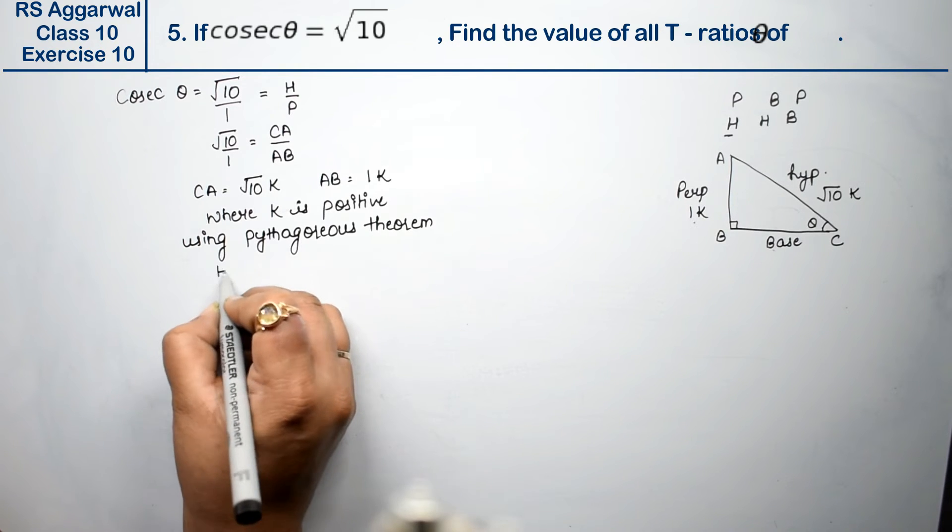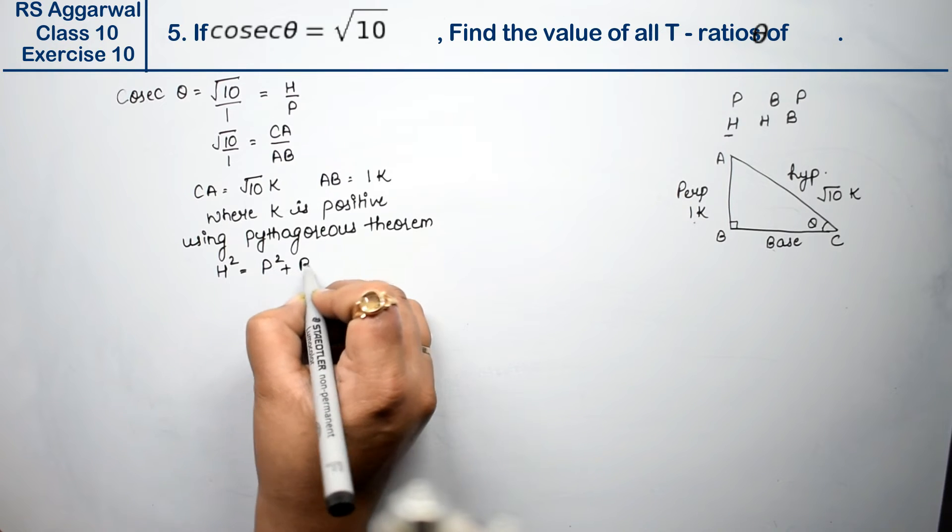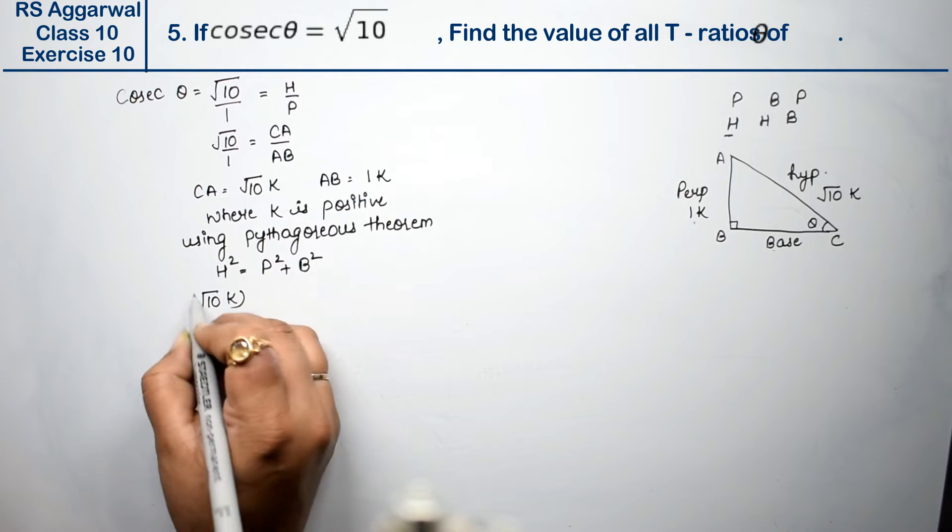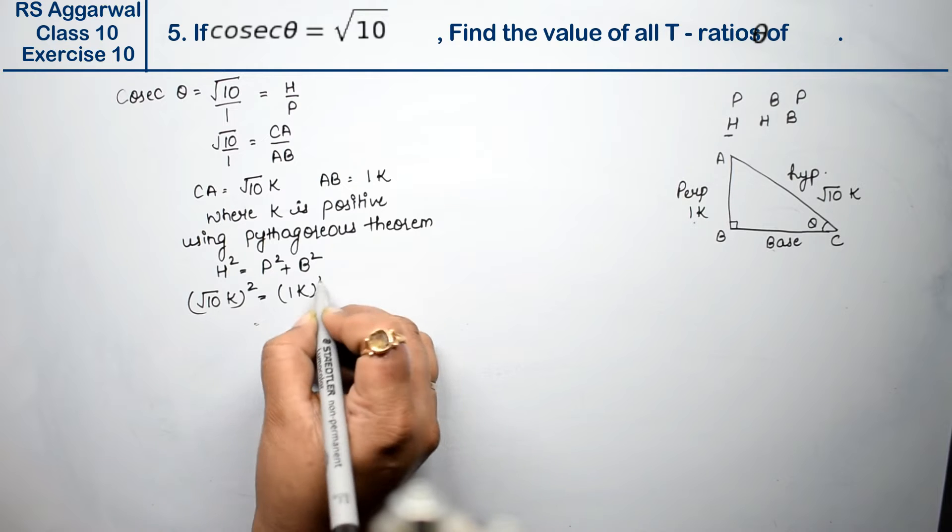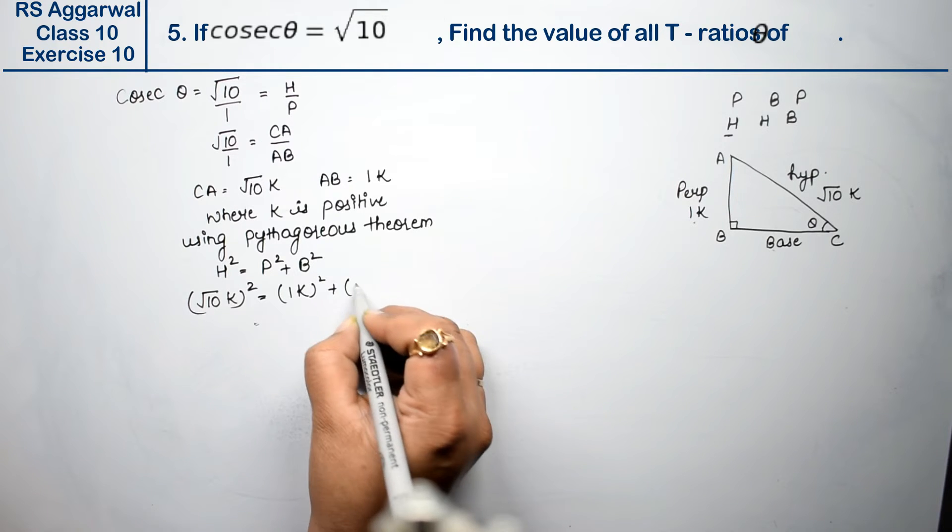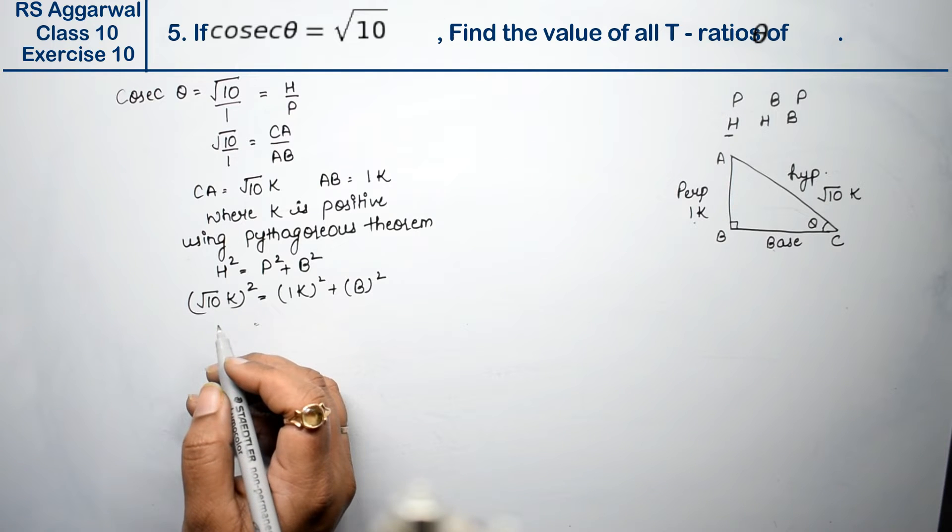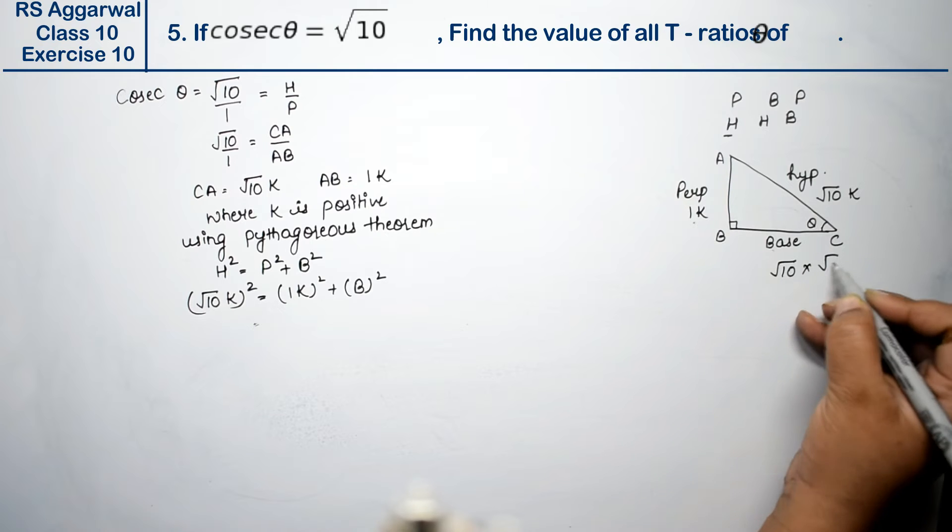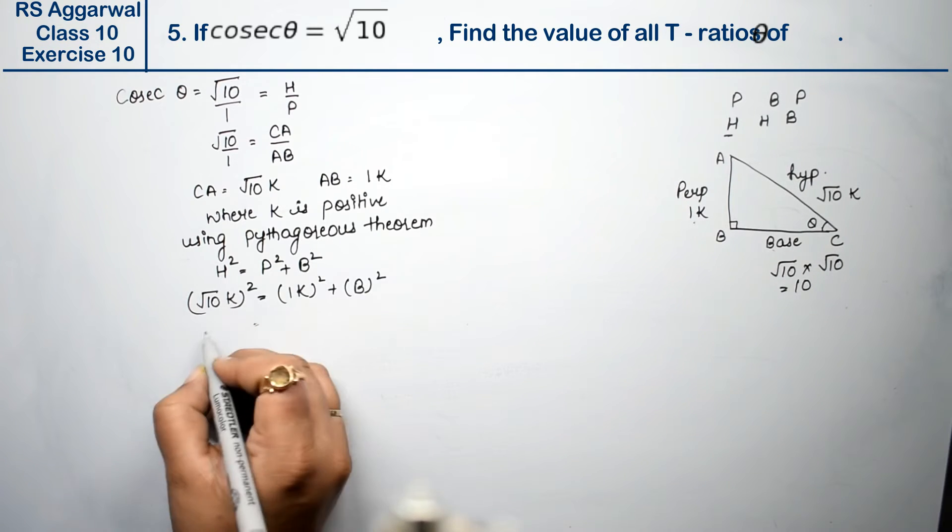Pythagoras theorem was H square equals P square plus B square. H was root 10k whole square. P was 1k whole square. And we have to find base. Root 10k whole square means root 10 into root 10. So its value is? Root and root cancel, so 10 remains.